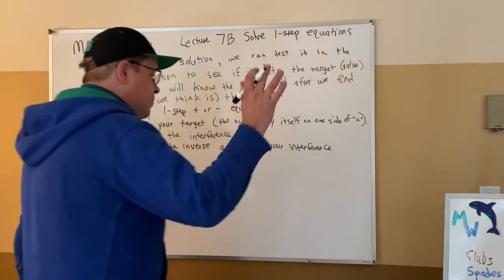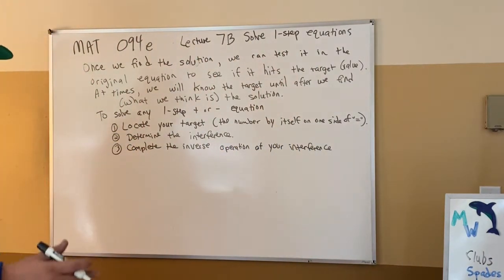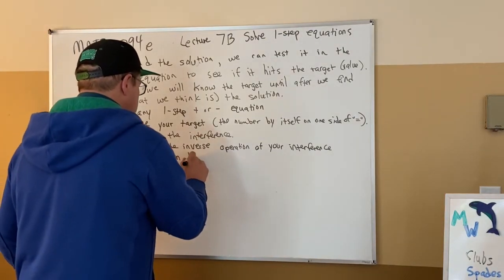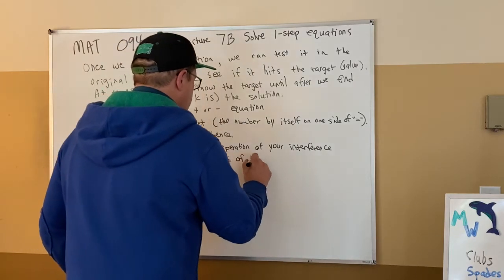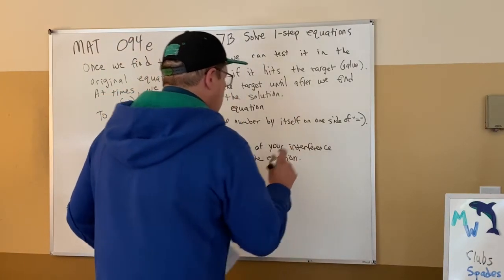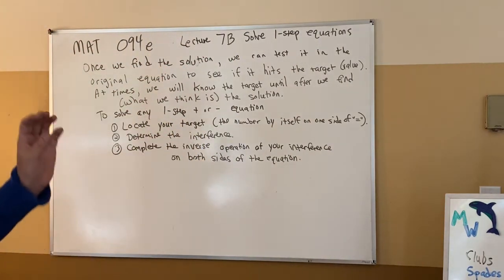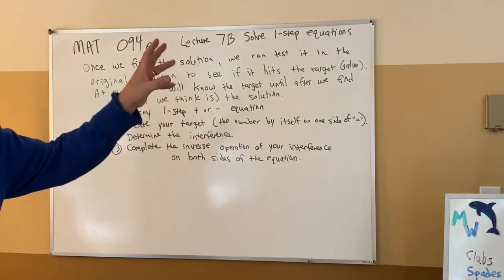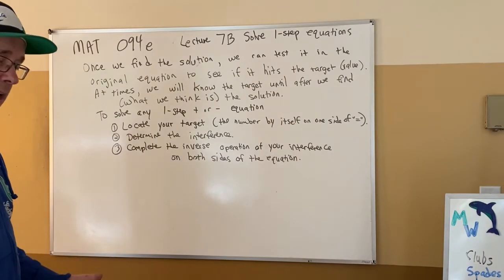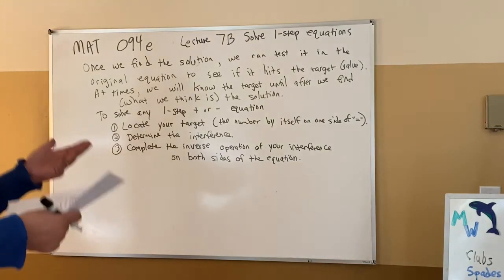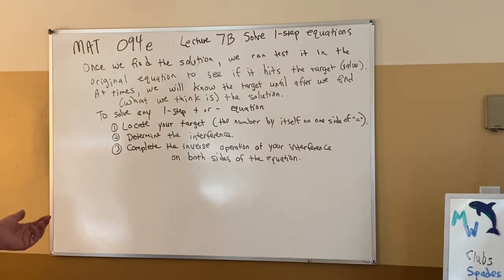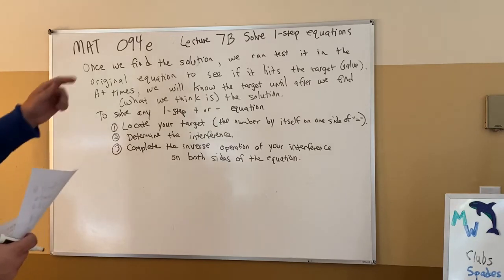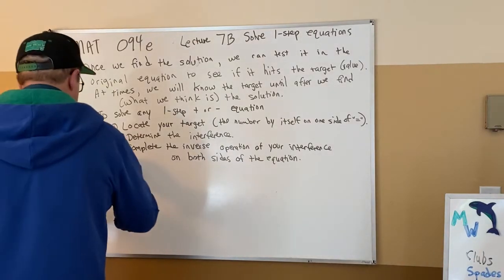You can't just say 'interference be gone' — there's a price to that. Complete the inverse operation of your interference on both sides of the equation. If this is 5 too high, I've got to make it 5 lower on both sides. If it's 7 too low, I've got to bring both sides up by 7 to find what x is without interference. And over there, I've got an adjustment to what the target was to find what's going to get the job done.